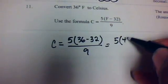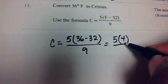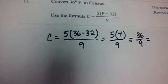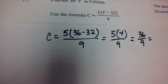And then 36 minus 32 will be 4, so it'll be 5 times 4 divided by 9, or 36 divided by 9, and they do want us to round off to the nearest tenth.